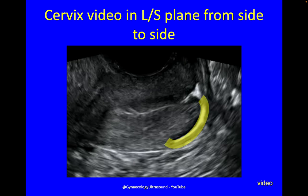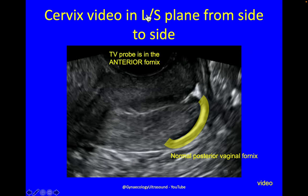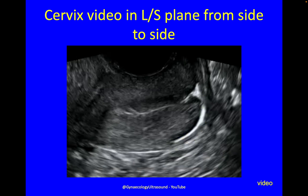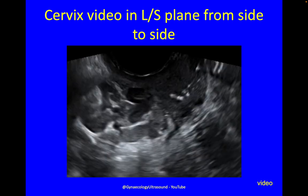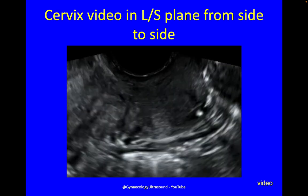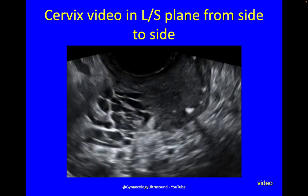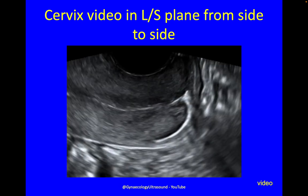Here you can see the posterior vaginal fornix — that's where the vagina attaches to the back of the cervix — and you can see the TV probe is in the anterior fornix. There's the external os and the internal os. Where the fornix attaches to the back of the cervix, there's more cervix above it — this is the intravaginal cervix and this is the supravaginal cervix. Going side to side, demonstrating that posterior vaginal fornix nicely. You can see this is a completely normal looking cervix.